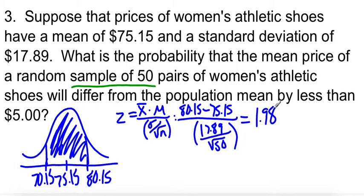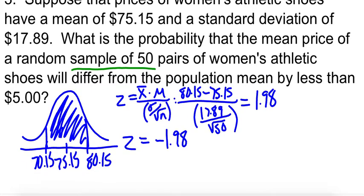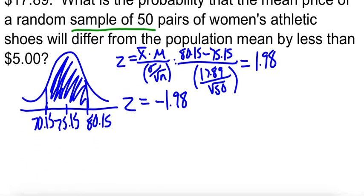When you do the other Z-score using the 70.15, you end up with a negative 1.98. So just a little shortcut there for us. So we need to find the area in between these.